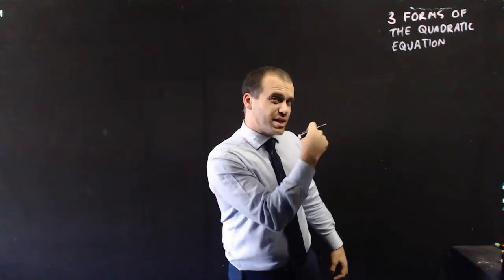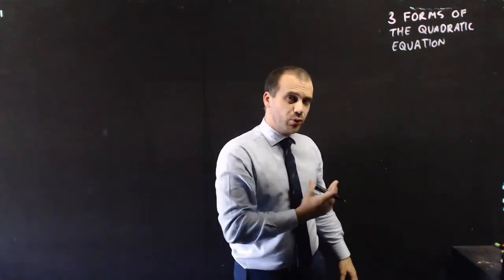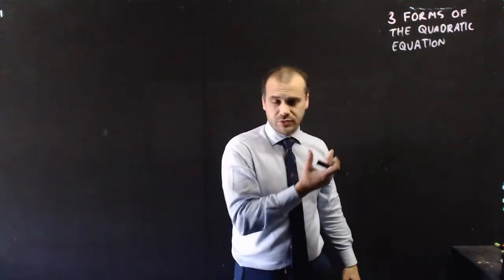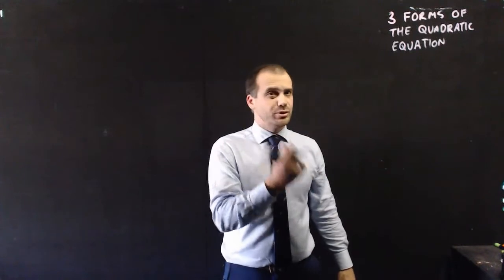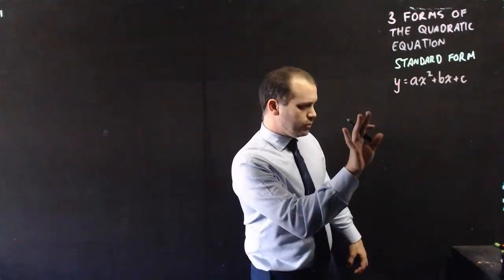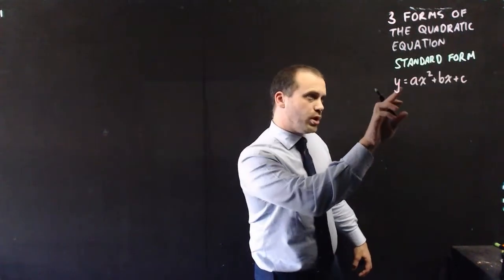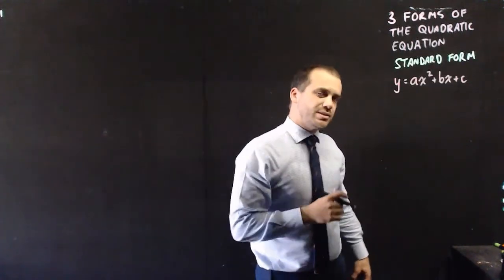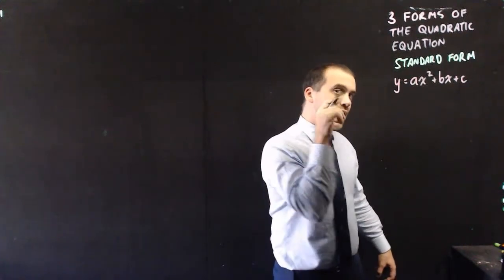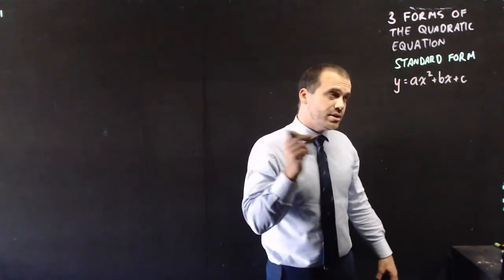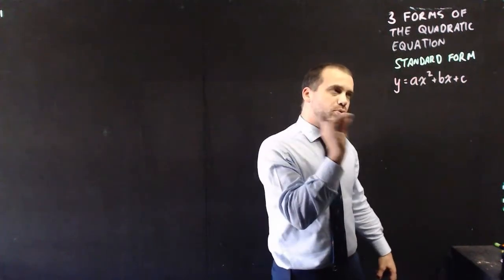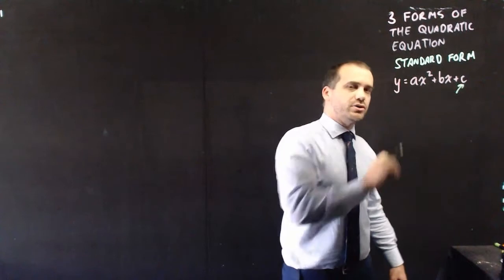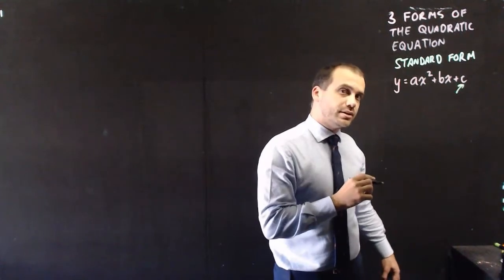Quadratic equations are so important that we have three forms of equation that we can look at them in. We have the standard form y equals ax squared plus bx plus c. This is cool because at a glance you know that the y-intercept is this value right here.